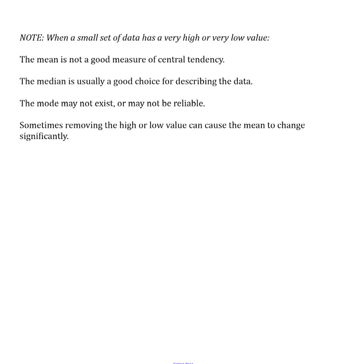In a case where you have a really small set of data with some extreme numbers, so one very high or one very low, it's actually a lot better to use the median. Mode might exist or might not, but when you only have five numbers, it's not going to be very reliable. So when you have a small set of data, it is often better to use the median to describe the data.